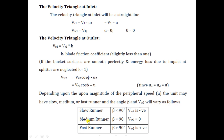Depending upon the magnitude of the peripheral speed, we can classify the runner as slow, medium or fast. For a slow runner, β is acute, so vw2 is negative. For a medium runner, β = 90°, so vw2 = 0. For a fast runner, β is greater than 90°, so vw2 is positive.